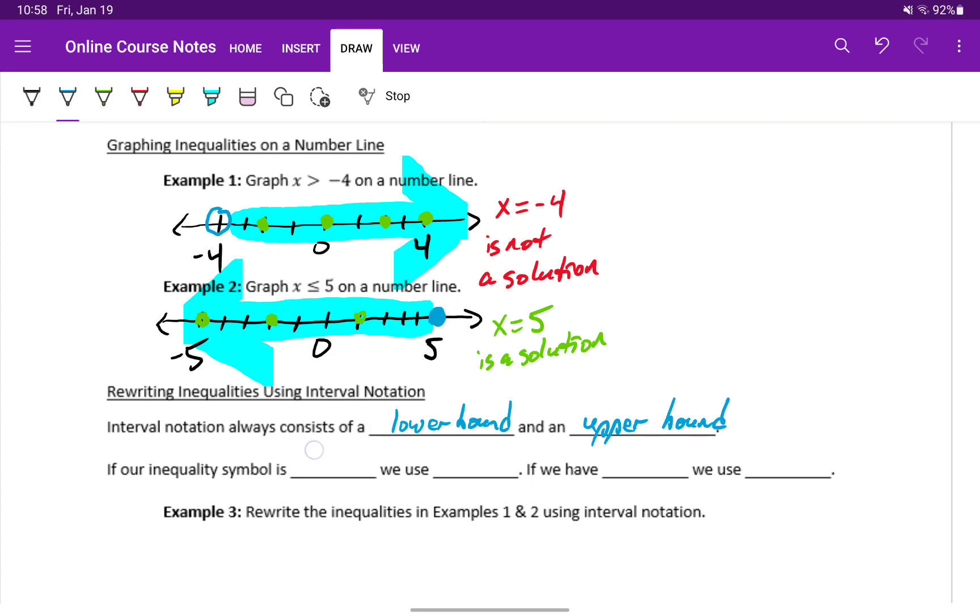If our inequality symbol is a less than statement or a greater than statement, then we'll use rounded parentheses on that end of the interval. If we have a less than or equal to or a greater than or equal to statement, then we would use square brackets on that end of the interval.